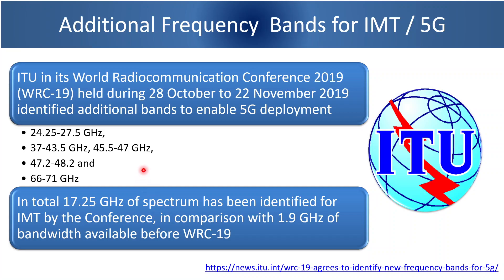Comparing this with earlier identified frequency bands for IMT, it was only 1.9 GHz, so more than 8 times additional spectrum has been allocated to enable 5G deployment. When spectrum is allocated by the ITU in its WRC meeting, that does not mean it is being allocated for 5G or 4G specifically — it is allocated for IMT, International Mobile Telecommunications. Standard Developing Organizations then specify which frequency bands will be supported by the technology they are developing for 2G, 3G, 4G, and 5G.